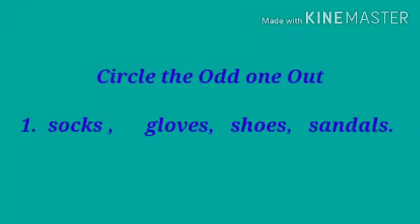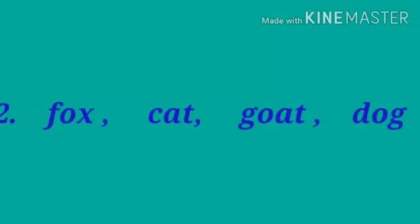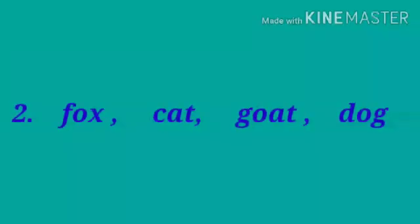Now, circle the odd one out. Number 1: socks, gloves, shoes, sandals. Think, student — which one? Number 2.